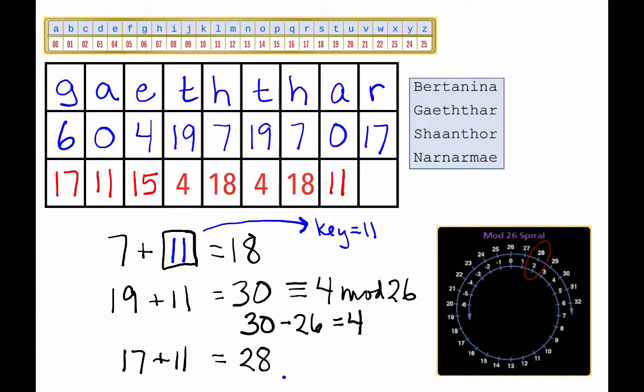We can look over at our wheel and see that 28 wraps around to the 2, so that 28 is congruent to 2 mod 26. And the last number we need to enter in the grid is a 2.